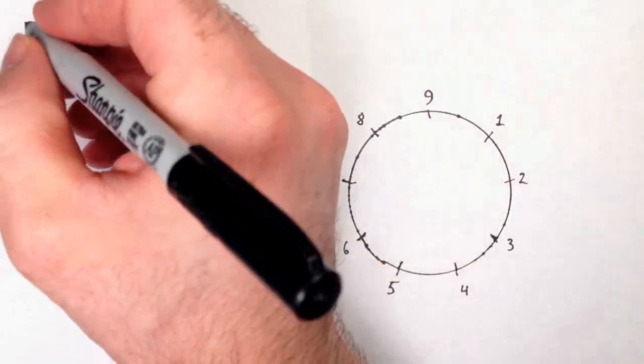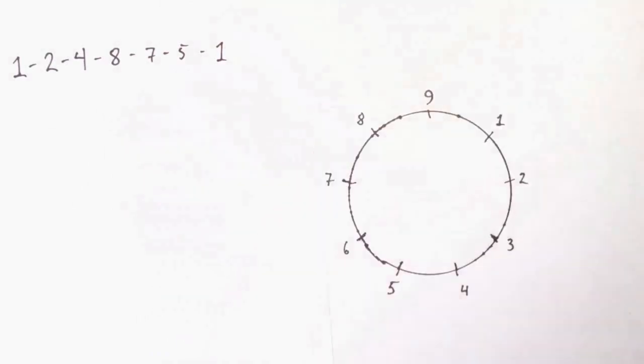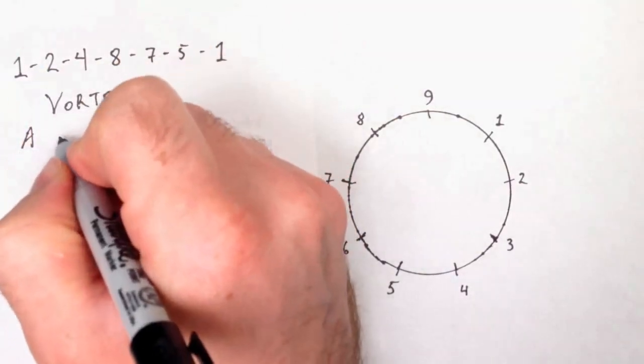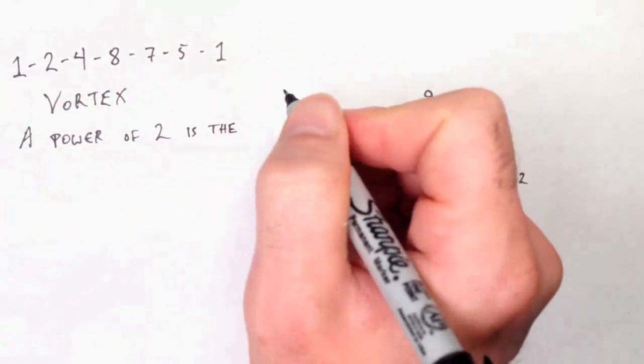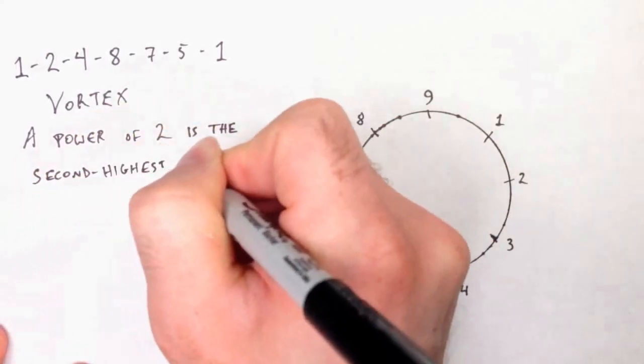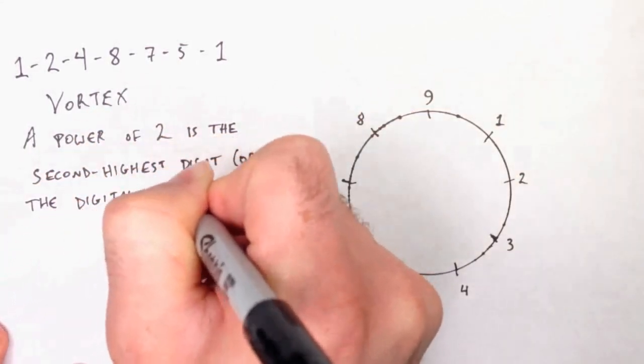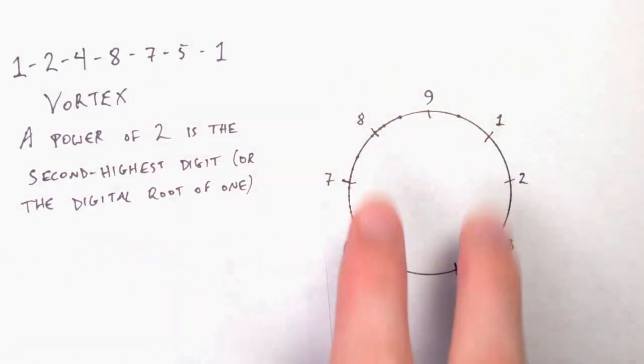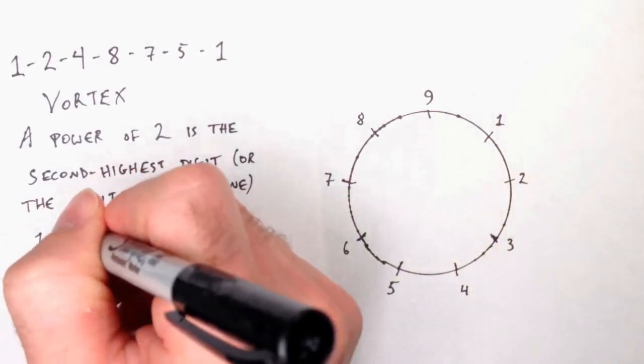Next, let's talk about the vortex. The one, two, four, eight, seven, five, one repeating loop. Once again, this is just a coincidental feature of the base 10 decimal system. If we were using a different base, this wouldn't necessarily work. A power of two is the second highest digit in base 10. Or at least the digital root of a power of two is the second highest digit. It matters for two reasons. First, because it makes them symmetric and that's going to matter later. But for the other reason, we're going to need to go through them. So let's start.